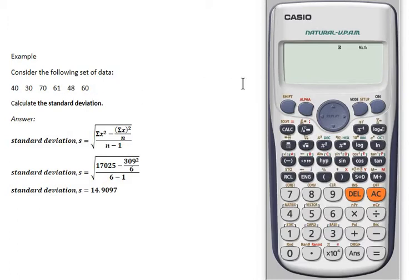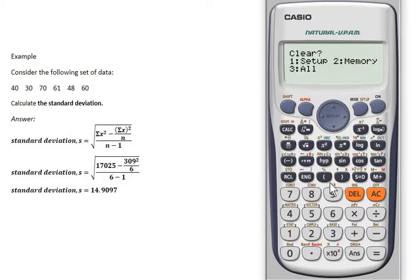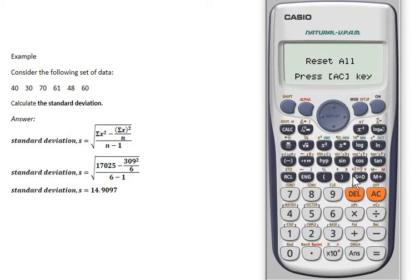First thing first, you need to reset the calculator into default mode. Press Shift, press number 9, choose number 3 to clear all the setup and memory. Press equal for yes. Now your calculator is in default mode. Press AC to clear.